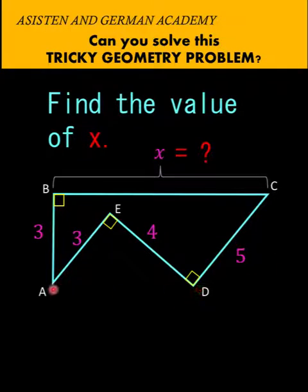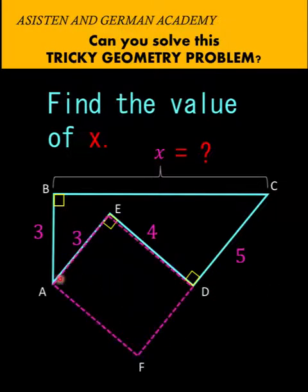But the problem with that approach is we do not know if we can form a straight line segment here at the bottom. So another approach is we can create a rectangle here since it is given to be 90 degrees here and 90 degrees here also.